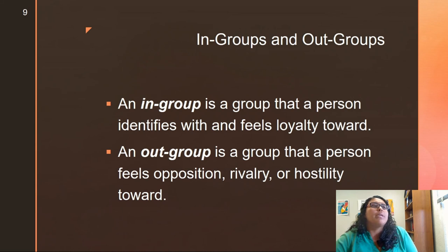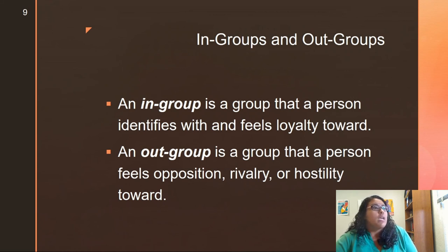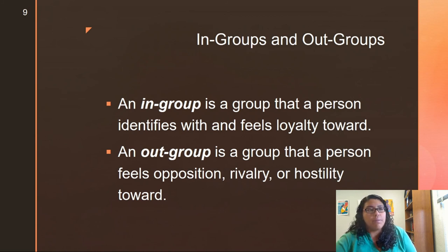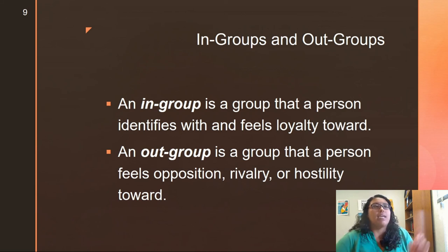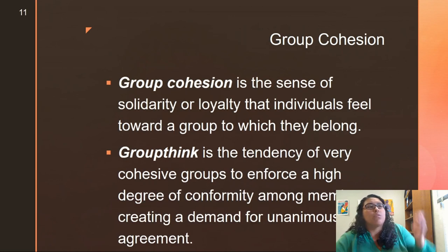Group cohesion is the sense of solidarity or loyalty that individuals feel towards a group to which they belong. Groupthink is a tendency of a very cohesive group to enforce a high degree of conformity among members, creating a demand for unanimous agreement. Going back to in-groups and out-groups — these are built through group cohesion and groupthink.